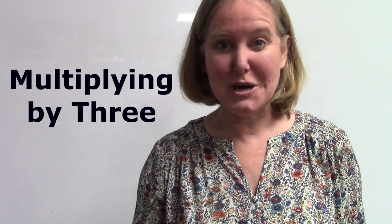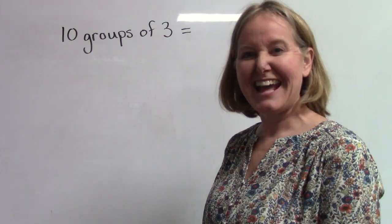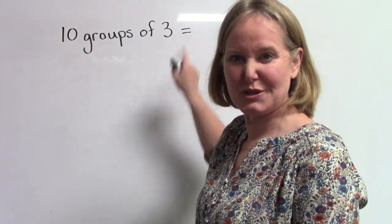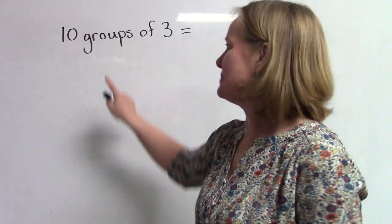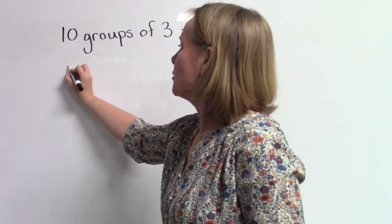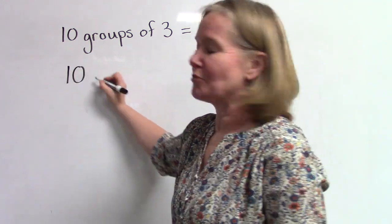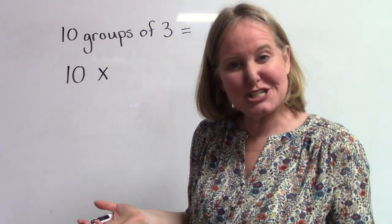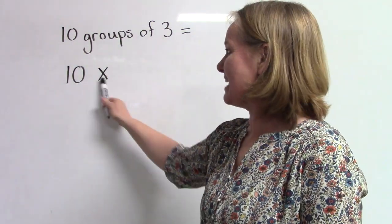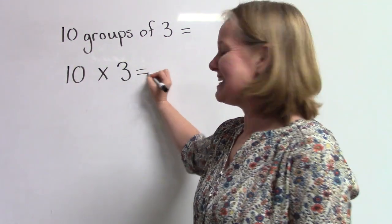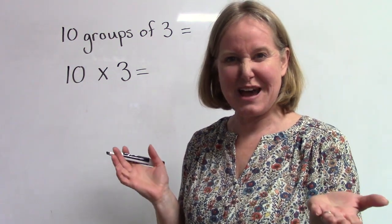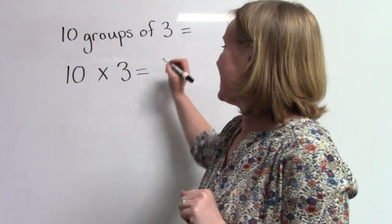Good job! Let's take a look at multiplying by three. Here on the board I've written ten groups of three equals. We have a symbol that means 'groups of.' So when we're writing a multiplication problem, instead of writing 'groups of' we can write an x, or the multiplication symbol. Ten groups of three equals — if you have ten groups of three, do you know how many you have? It's thirty.